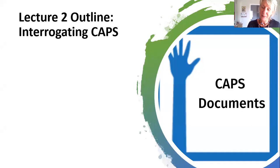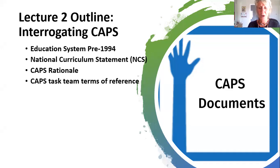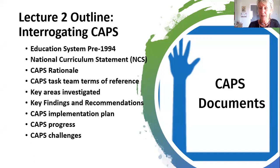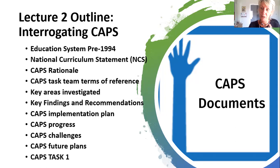Today's lecture is the interrogation of the CAPS document. We'll look at about 11 points: where we were with education before 1994, where the National Curriculum Statement came in — the NCS — what the rationale was for it, what the task team were required to do, what they investigated, their findings and recommendations, the implementation plan for CAPS, the progress, the challenges, and the future of CAPS. We'll try to cover all of these in today's lecture, and then finish off with CAPS task one, which will also help you with assignment one.